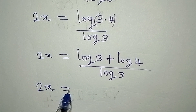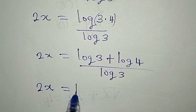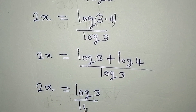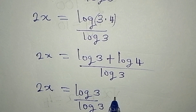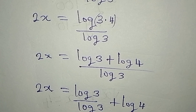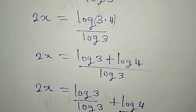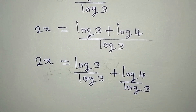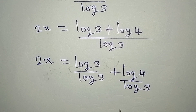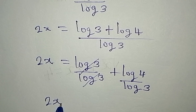Now let's split this. We have 2x that is equal to log 3 over log 3, so log 3 can cancel with log 3. Now 2x is equal to...